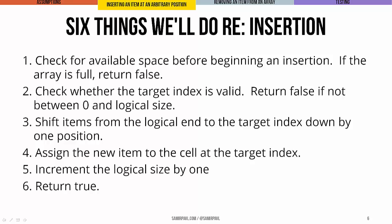Third thing is everything from the target index all the way to the logical end of the array is going to get shifted down by one position to make room for the item that we're inserting. Fourth, we're going to assign the new item to the cell at the target index, which now we've cleared some space for by shifting everything else down. The last two things are we're going to increment the logical size by one because now our array's bigger, and we'll return true to indicate that this operation worked.